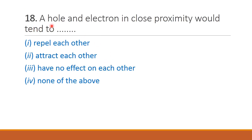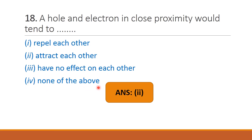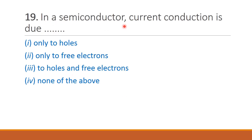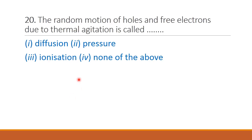Next question: a hole and electron in close proximity would tend to — repel each other, attract each other, have no effect, or none of the above. An electron is a negative charge and a hole is a positive charge, so they attract each other. Therefore option 2 is the right answer. In a semiconductor, current conduction is due to holes and free electrons — option 3 is the right answer. The random motion of holes and free electrons due to thermal agitation is called diffusion — option 1 is the right answer.